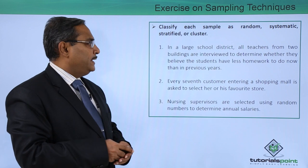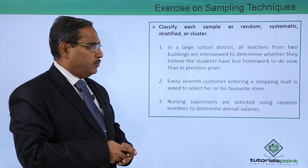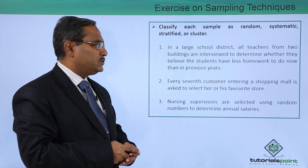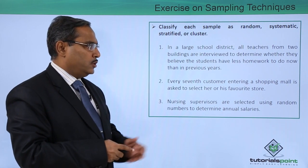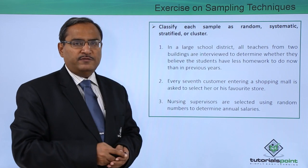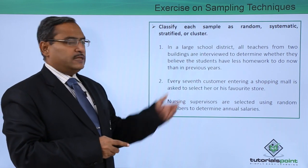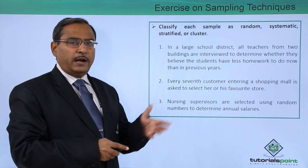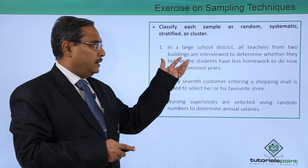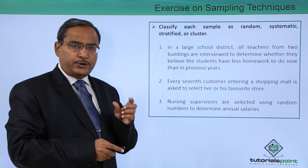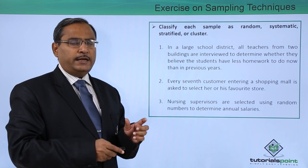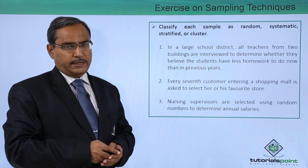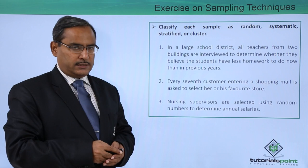Problem number one: In a large school district, all teachers from two buildings are interviewed to determine whether they believe students have less homework to do now than in previous years. Here we have multiple buildings in the large school district, but we are selecting only two buildings and interviewing all the teachers in those two buildings. So obviously, this is a good example of cluster sampling.